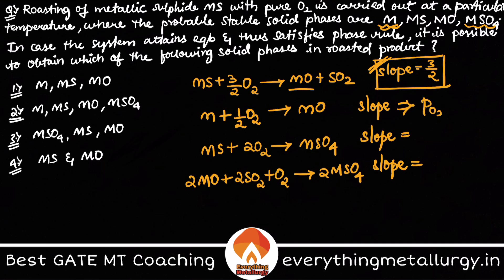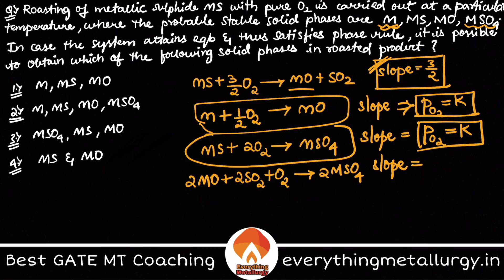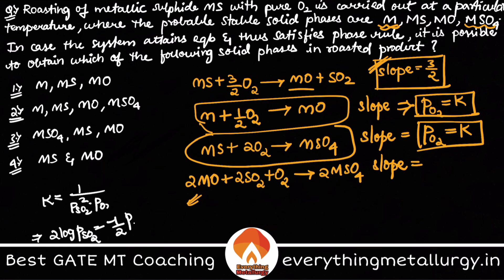Similarly, the reaction MS + 2O₂ → MSO₄ also has no SO₂ term, so it also gives a vertical line parallel to the y-axis: P(O₂) = constant. For the reaction MO + SO₂ + O₂ → MSO₄, the equilibrium constant K = 1 / (P(SO₂)² · P(O₂)). Applying log and rearranging gives slope = −1/2.